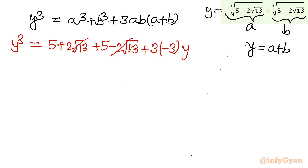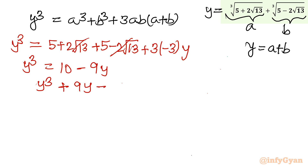Now I will cancel both terms. So the equation becomes: y³ = 10 − 9y. Taking all terms to the left-hand side: y³ + 9y − 10 = 0. Now we can apply the remainder theorem, rational root theorem, synthetic division, or factorization — there are many ways possible.